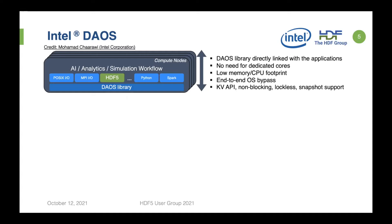Intel DAOS is a new kind of file system that succeeds Lustre, introduced by Intel. It has been in design since about 2012, when we started collaborating with them. DAOS provides a library available like a Lustre library, but it doesn't go through the kernel — you get end-to-end OS bypass with everything in user space. It exposes a key-value API for writing data, supports non-blocking IO directly, is lockless, and has support for snapshots at all levels.